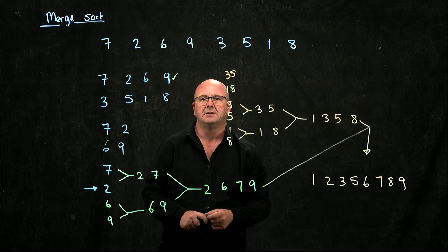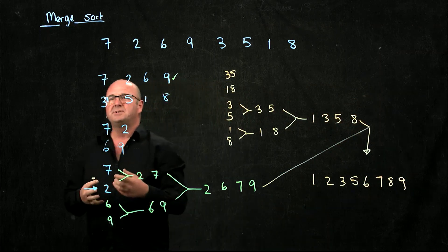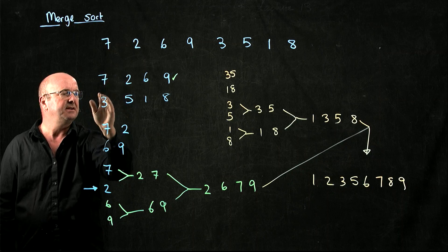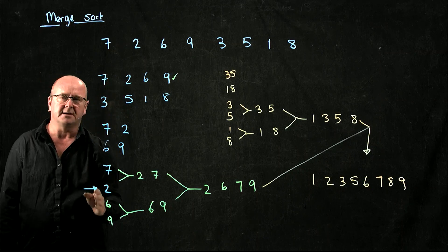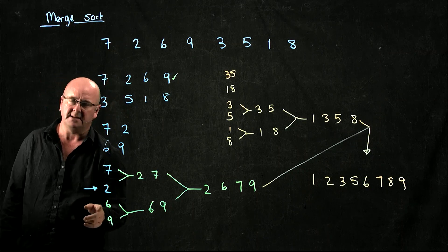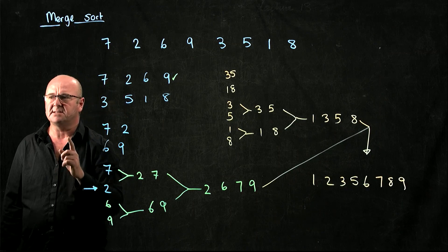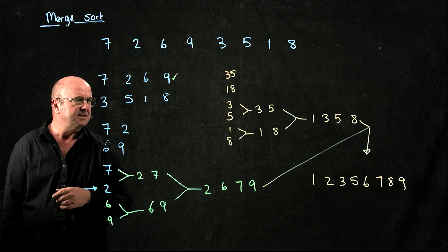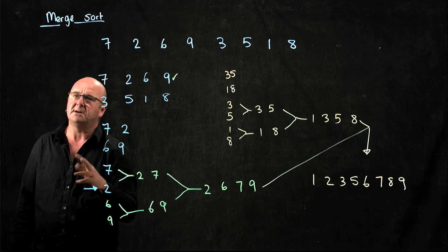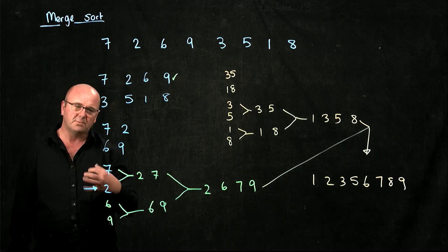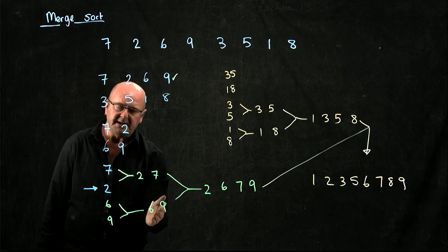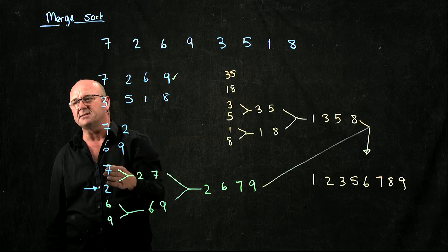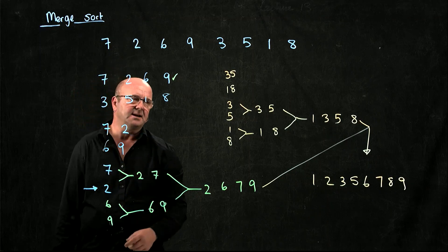Notice in the merge sort, what I'm doing at the beginning is splitting everything. I do a split, a split, a split, a split — I keep splitting until I get a single element list. Once I've got a single element list, it's sorted: the smallest things at the beginning, the largest things at the end. The work in a merge sort comes when we actually have to merge things back together.